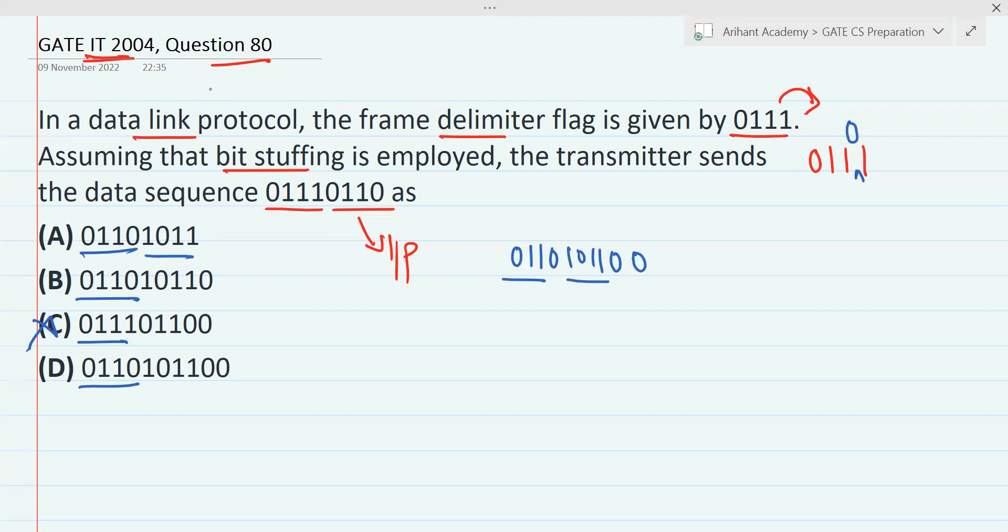And 0110 - okay, the next of all it is 1011, but after that two more zeros are there. Discard option B, but option D follows the concept and this is the correct answer.